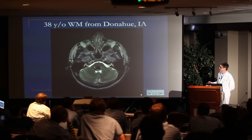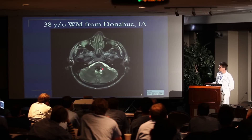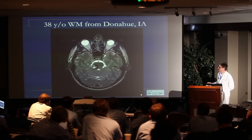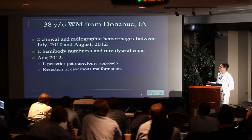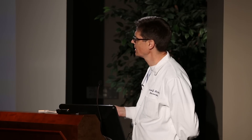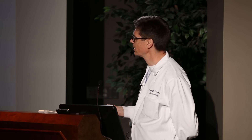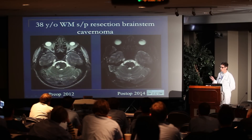Cavernous malformation, sure — though I thought this was going to be all just a big clot. It turns out this thing was hard as a rock — a big calcified rim. He'd had two clinical and radiographic hemorrhages over about two years, and left hemibody numbness with rare dysesthesias. We decided to operate. The post-op looks good — we came in, did a little corticotomy between five and eight, got into the lesion, and took it out.